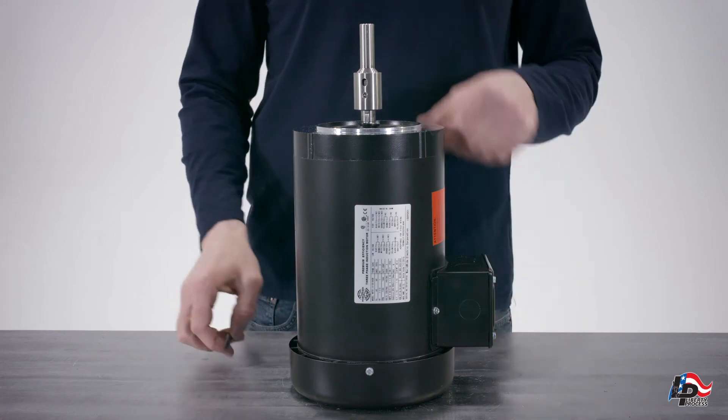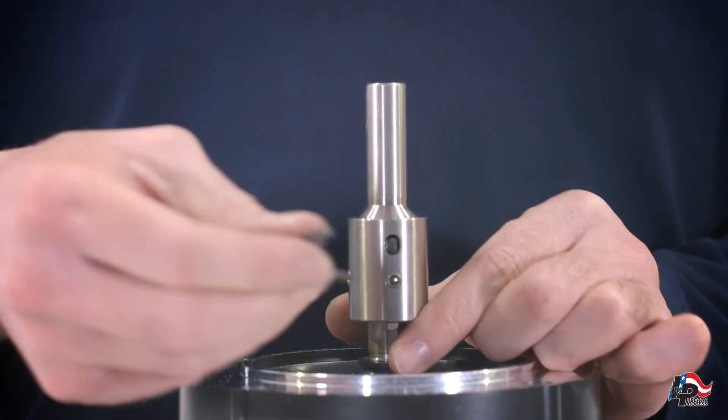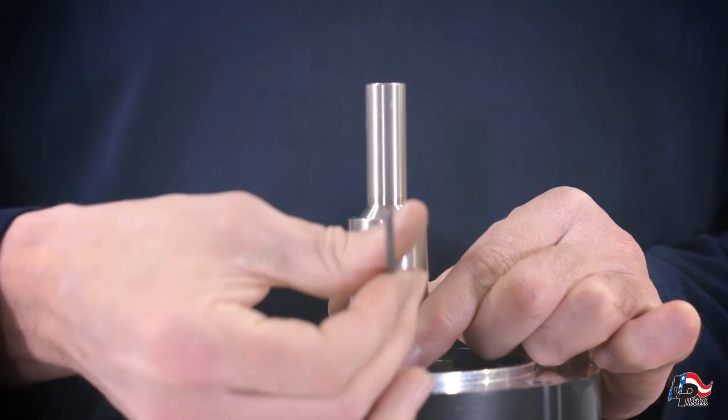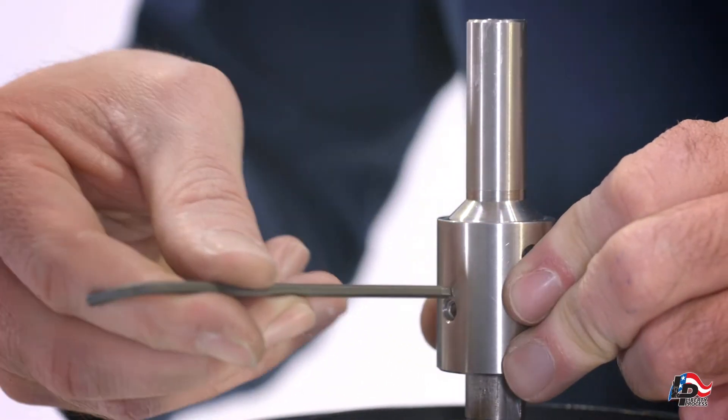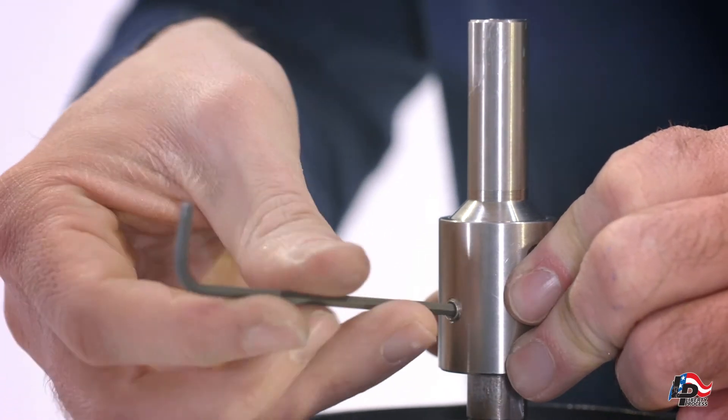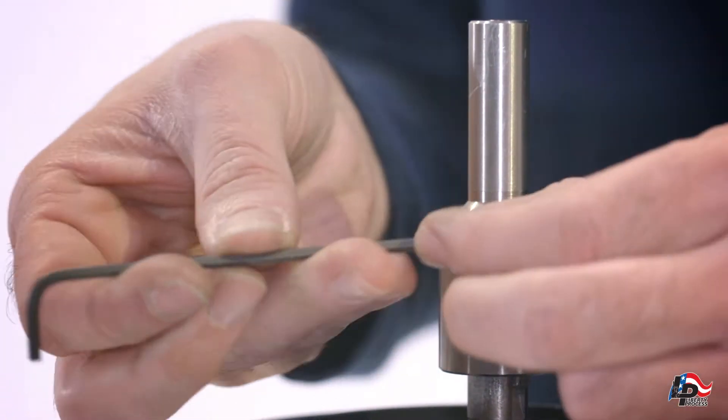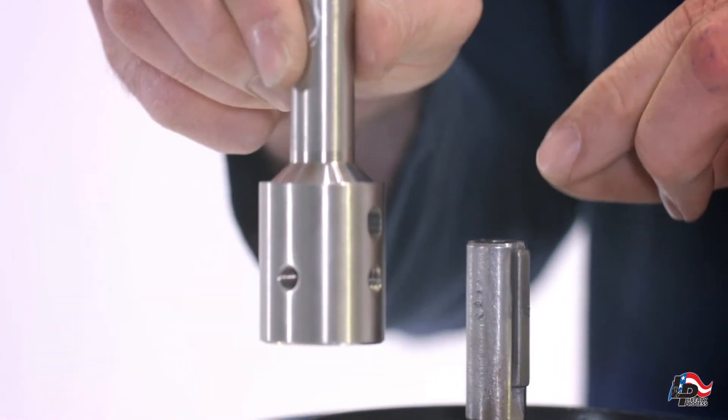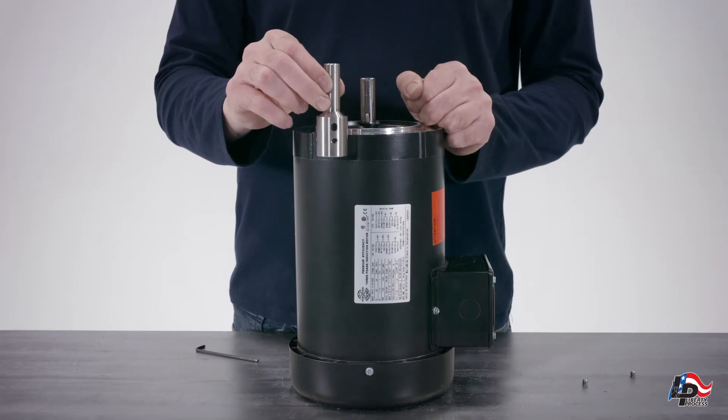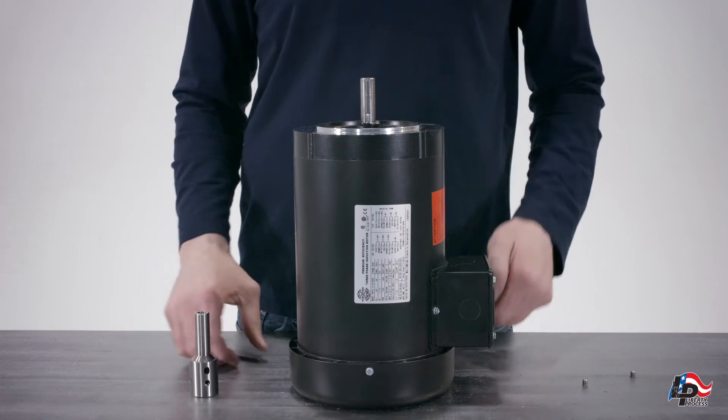Loosen and remove the two set screws from the pump stub shaft. Remove the pump stub shaft from the motor shaft. You have now completely disassembled your Liberty APM22 wobble stator pump.